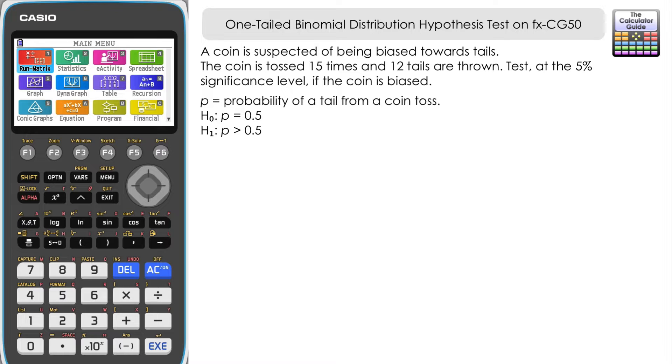Our alternative hypothesis, H1, sometimes labeled HA—we need to look at the first sentence in the question. A coin is suspected of being biased towards tails. That suggests we have a higher probability of getting tails than heads. So the alternative hypothesis is that P is greater than 0.5, expecting a higher probability than 0.5 of achieving tails because it's suggesting it's biased towards tails.